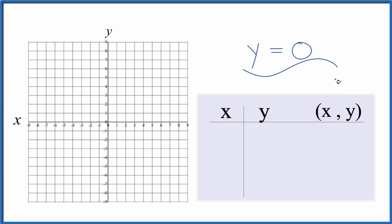Let's graph the equation y equals 0. What we'll do is we'll put values in for x, get values for y, and then we'll graph those points here on our graph paper.